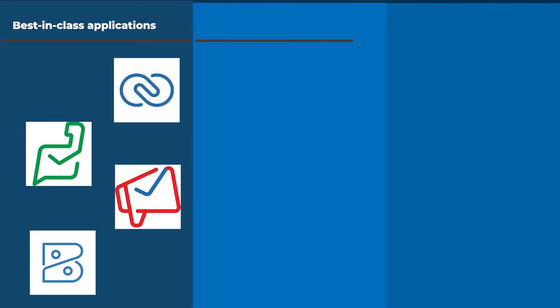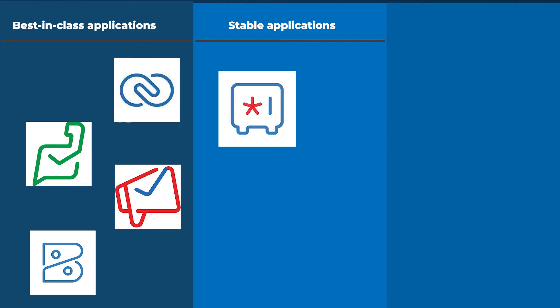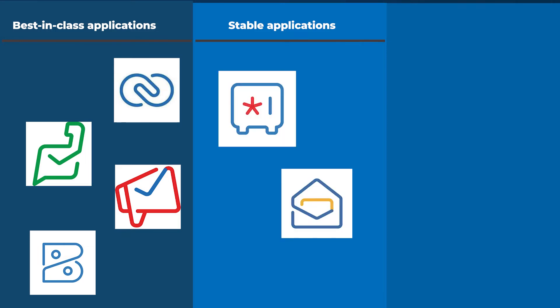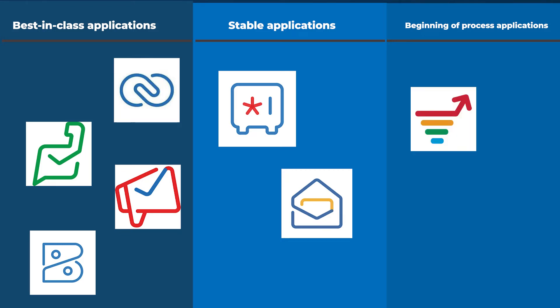From the other side, you have group number two. Those will be applications that are stable, mature, and okay — not perfect, but okay. And then you will have your third level applications. Those will be applications that are in the beginning of the process, such as marketing automations and Zoho Bookings. Those applications, as an example, I don't think that they are good enough for a live environment.